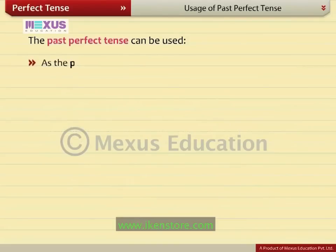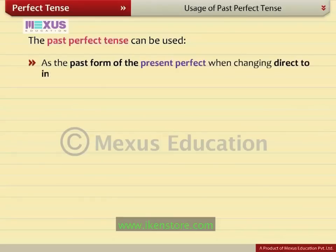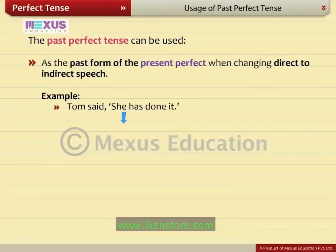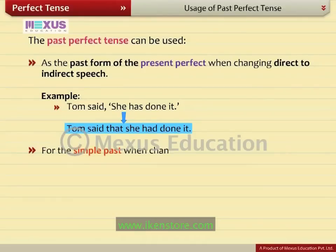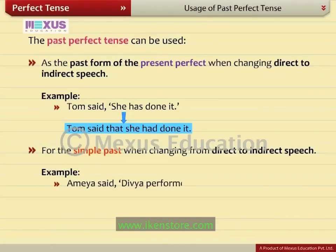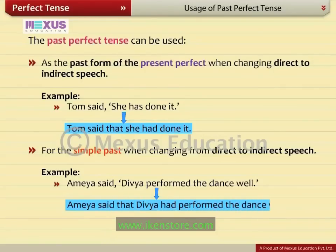The past perfect is used as the past form of the present perfect when changing direct to indirect speech. For example, 'Tom said she has done it' becomes 'Tom said that she had done it.' It is also used for the simple past when changing from direct to indirect speech. For example, 'Amaya said, Devya performed the dance well' becomes 'Amaya said that Devya had performed the dance well.'